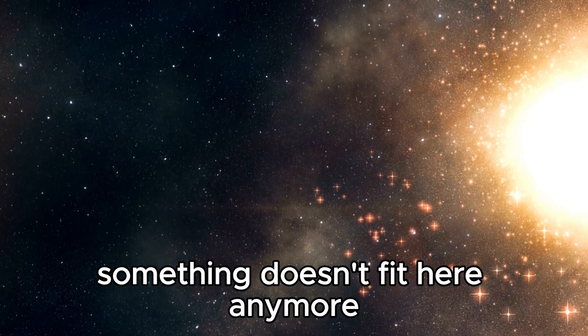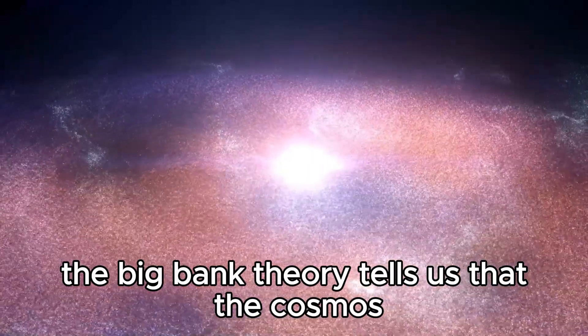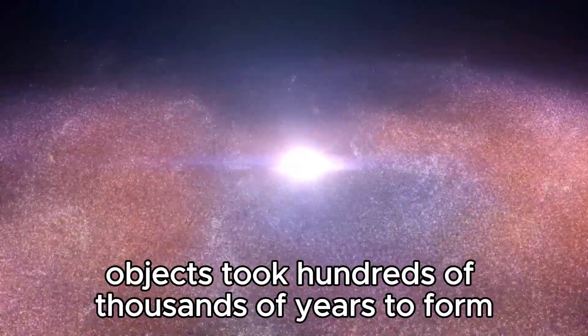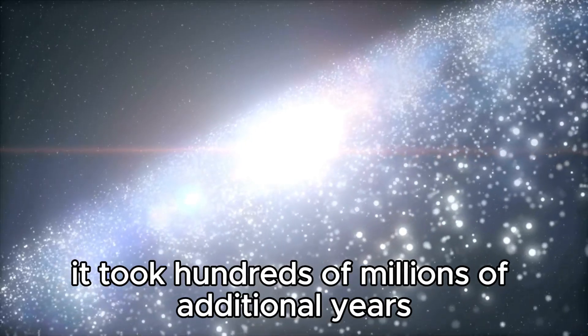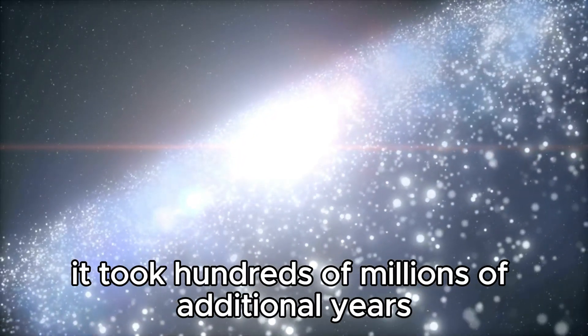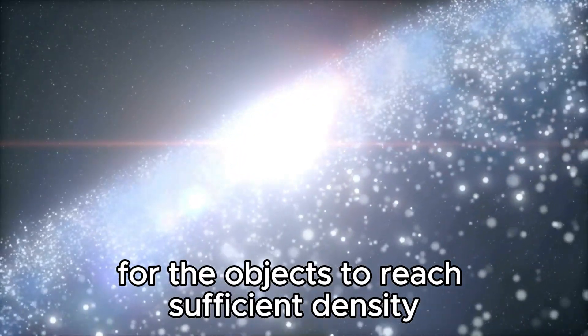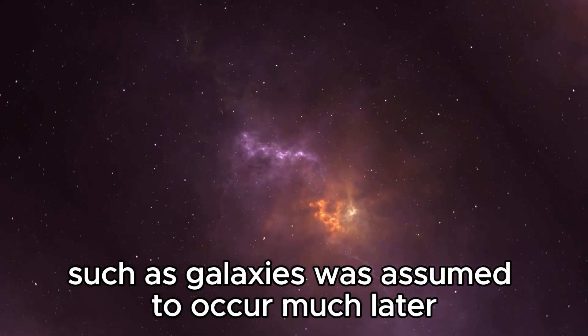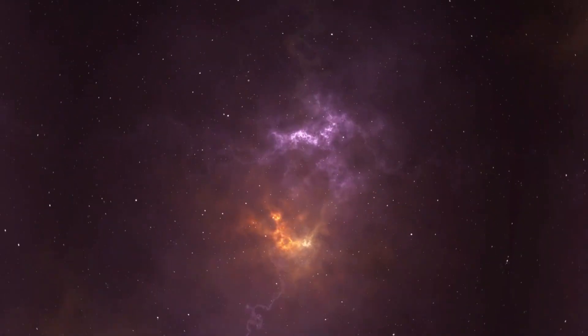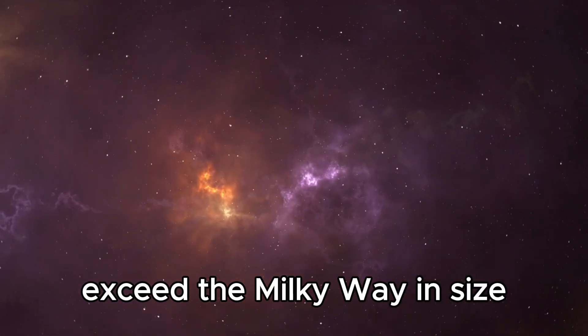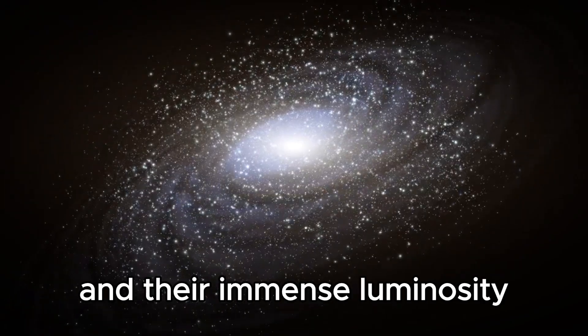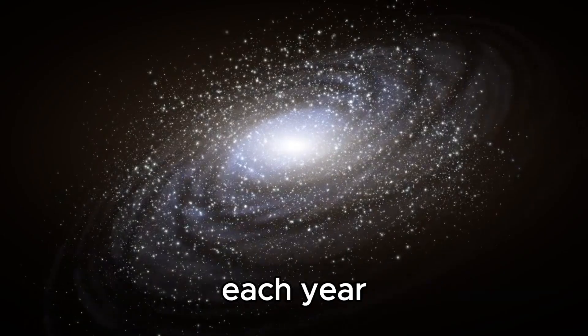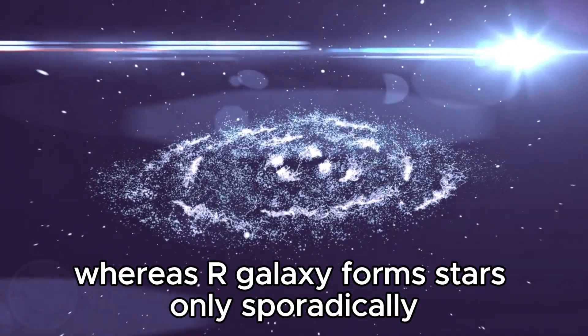Something doesn't fit here anymore. The Big Bang theory tells us that the cosmos was a hot mess after the initial event, and the first solid objects took hundreds of thousands of years to form. It took hundreds of millions of additional years for the objects to reach sufficient density and produce light. The formation of complex structures such as galaxies was assumed to occur much later. Some of the newly discovered galaxies exceed the Milky Way in size, and their immense luminosity indicates that they were probably forming hundreds of new stars each year.